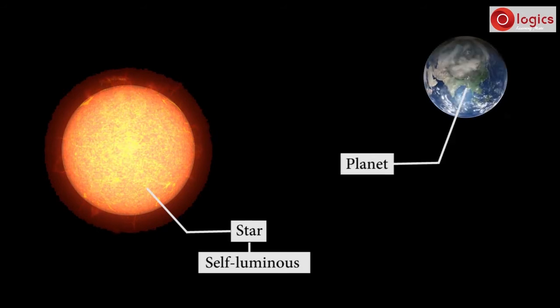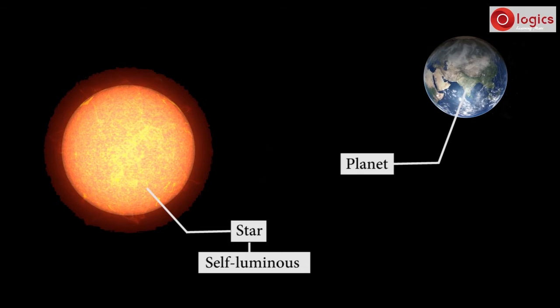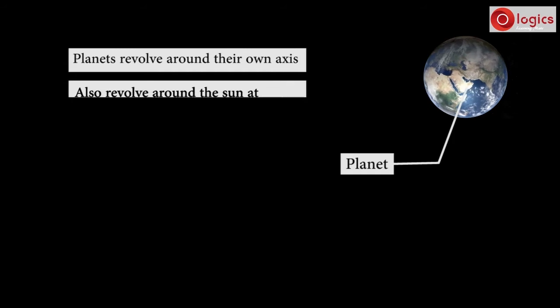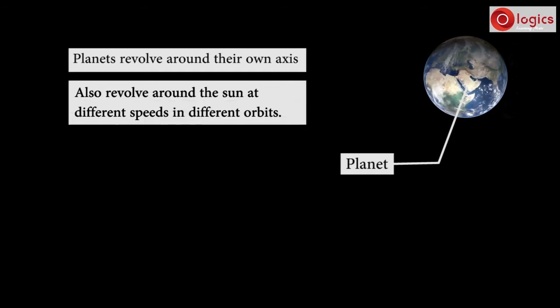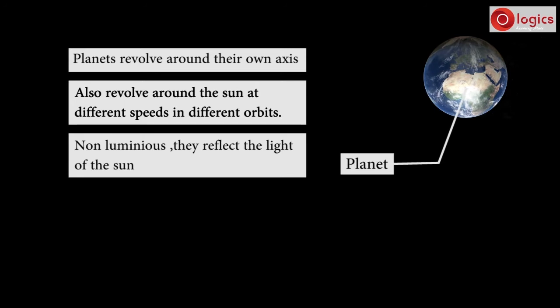Why Earth is called a planet? What is a planet? Planets revolve around their own axis and also around the sun at different speeds in different orbits. They do not have light of their own, they reflect the light of the sun.